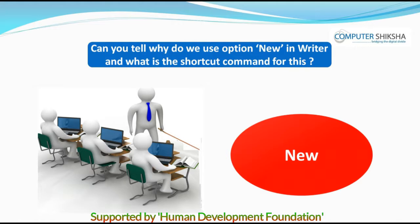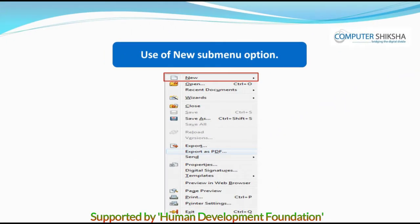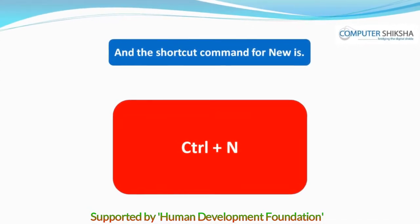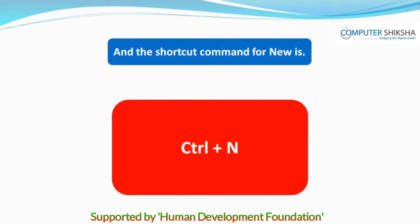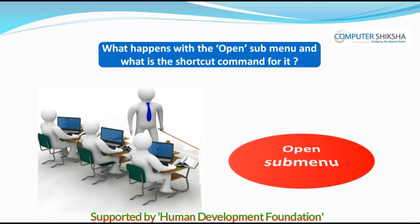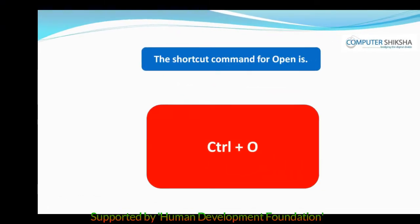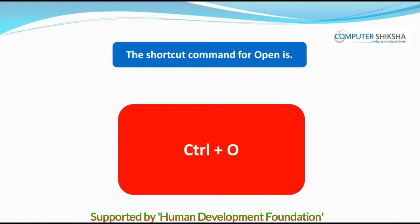Can you tell why we use the option New in Writer and what is the shortcut command for this? We use the option New to open a new page and the shortcut command for New is Ctrl+N. What happens with the Open submenu and what is the shortcut command for it? We use Open to open the files we have saved on our computer. The shortcut command for Open is Ctrl+O.